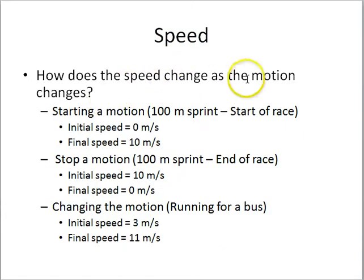So, how does the speed change as the motion changes? For example, while starting a motion, maybe a hundred meter sprint at the start of the race. So the guy will initially be standing still. We'll be at a ready mark. So his speed is zero because he's not moving.